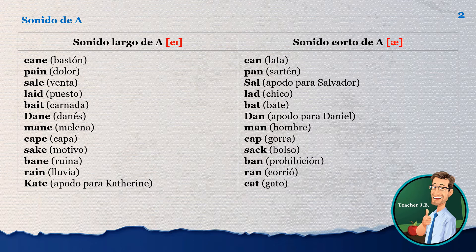A has several sounds, but today we are going to study A as in the long A sound. This one: bastón — that's 'cane.' It sounds: cane, cane. Bastón.